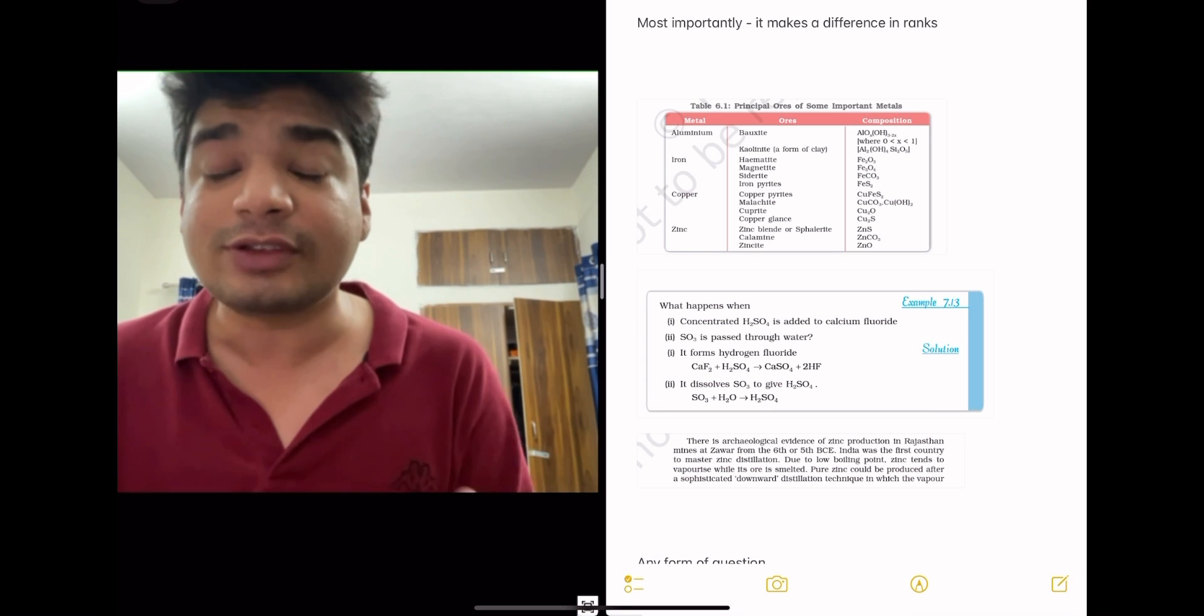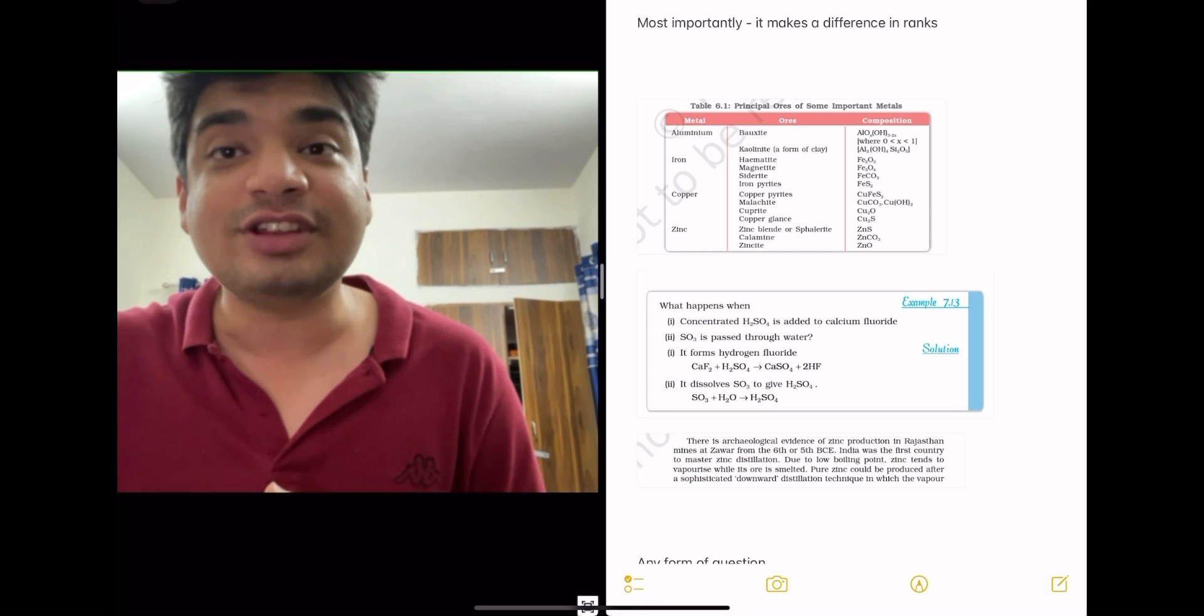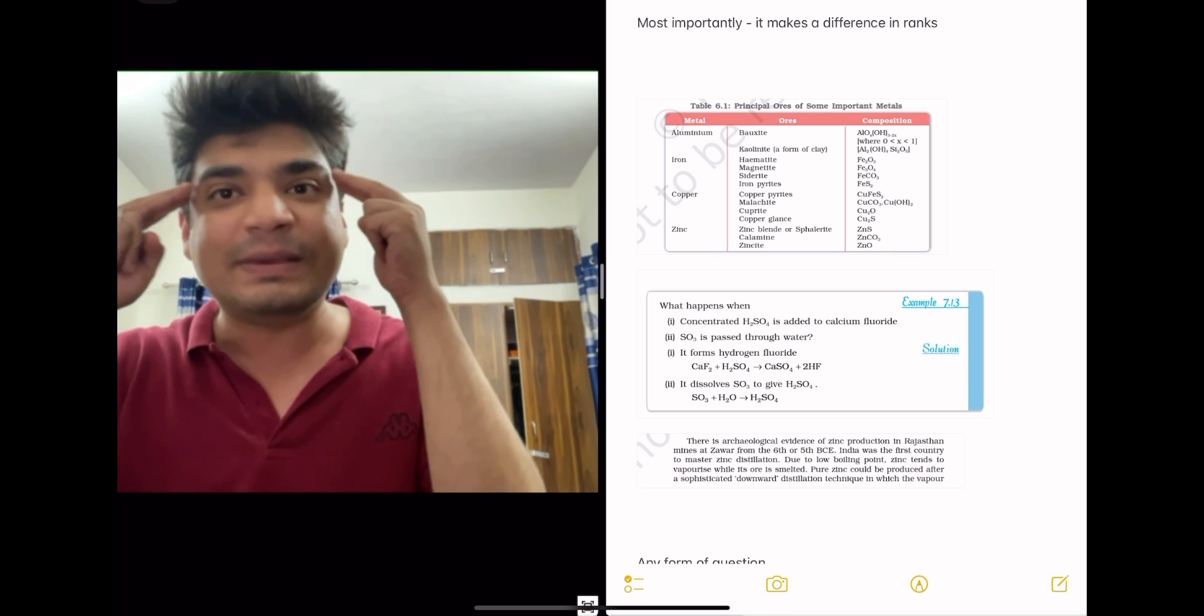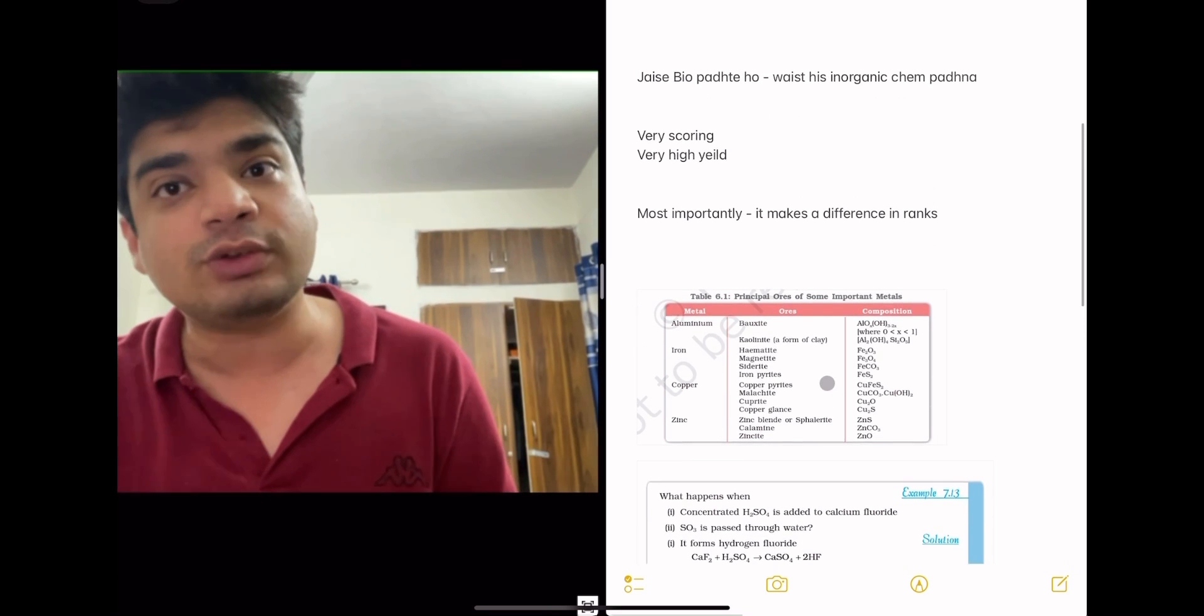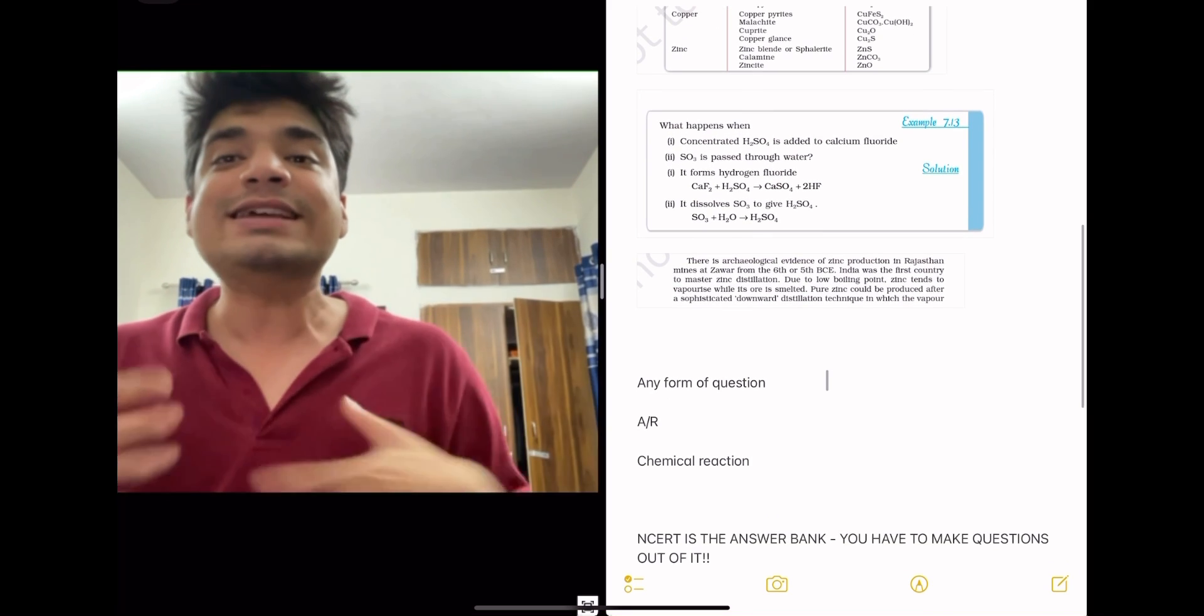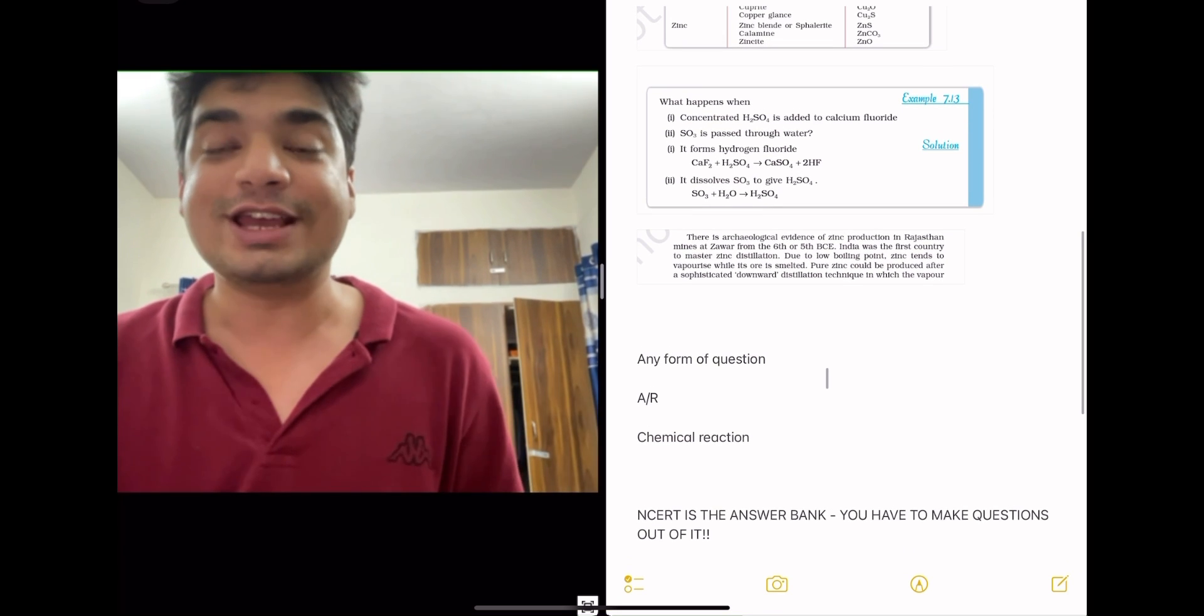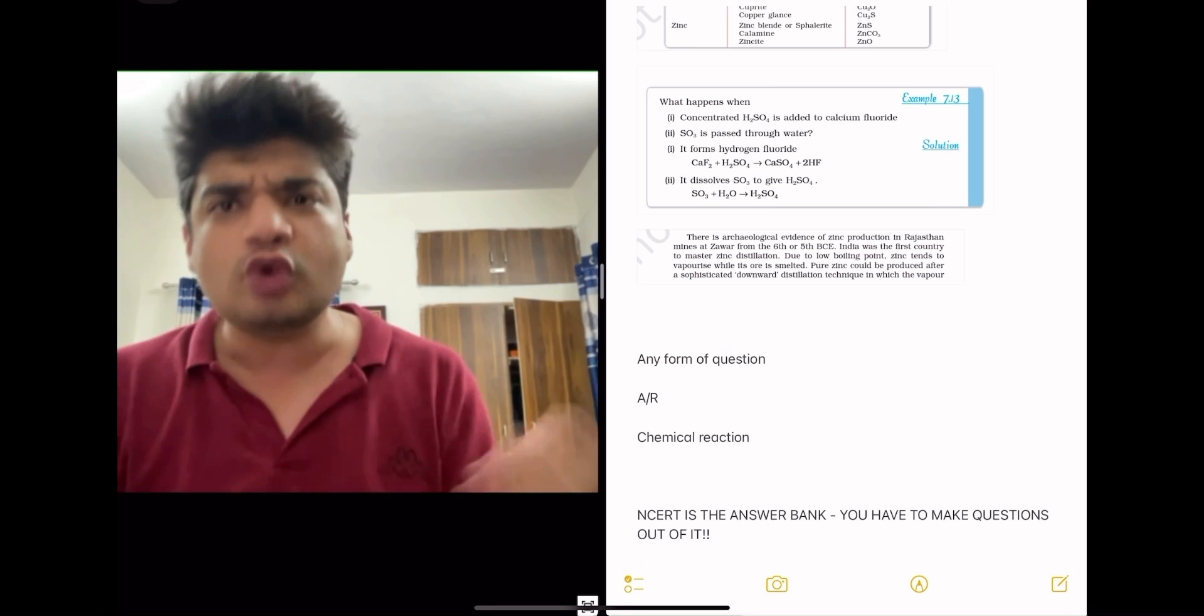Read each and every line of NCERT for inorganic chemistry the same way that you used to read biology NCERT and try to frame questions from each and every line. This is an explanation that is given, this can be a potential assertion reason question. This is a table that is given, this is a mix and match fact-based question that can be asked. These are the solutions that are given in NCERT, concept-based questions that can be asked from inorganic chemistry. Whenever you are reading NCERT, NCERT is the answer bank. You have to make questions out of it. You should subconsciously try to make a Q-bank out of it.